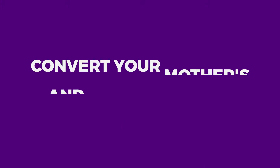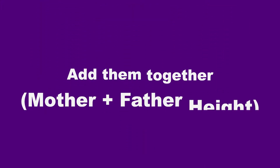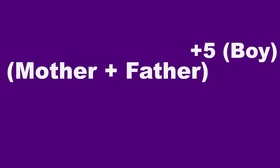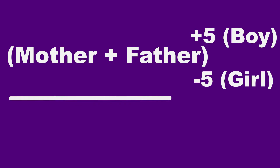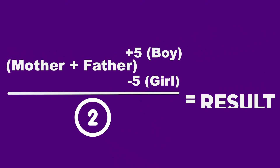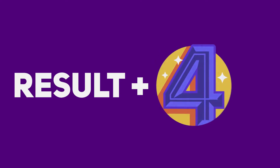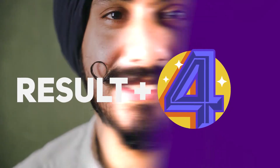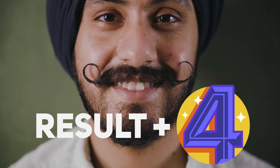First, convert your mother's and father's height to inches and add them together. Then if you are a boy, add 5 inches to the total. But if you are a girl, subtract 5 inches from the total. Then divide the final number by 2. This last number gives your average predicted height, but you can be up to 4 inches taller than that — which I will explain momentarily. Let's understand this formula first.